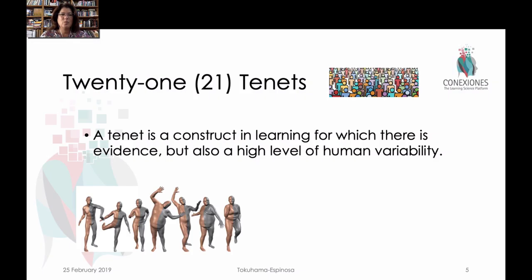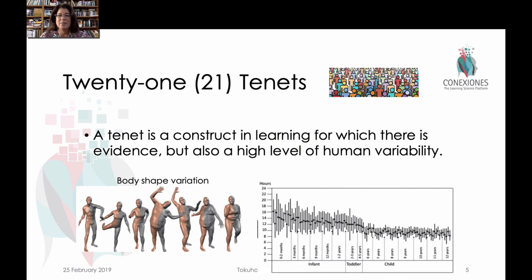Anxiety is one of these 21 tenants that was discovered in the Delphi panel. A tenant is something that's true for all individuals but has a huge range of human variability. So we have to be careful when we say something like, well, this might make the kids anxious. Who will it make anxious? When will it make them anxious? Why will it make them anxious is really very important to think about as well.